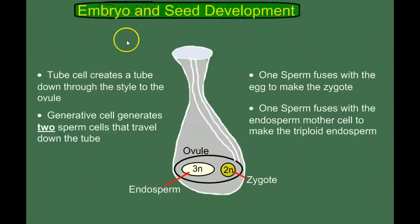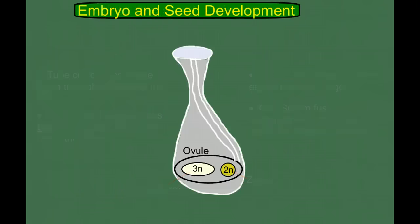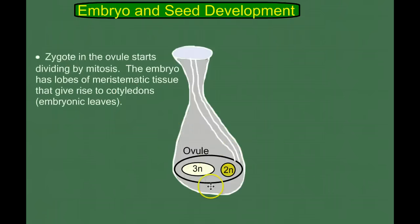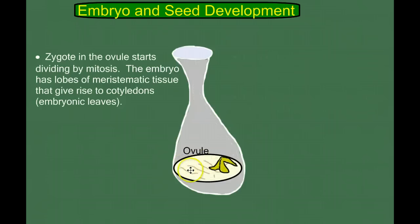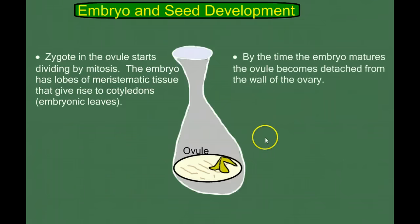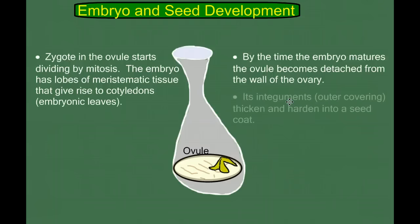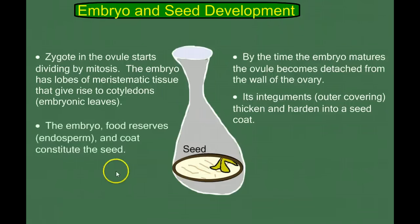Now let's look at embryo and seed development. The zygote in the ovule starts dividing by mitosis, and the embryo has lobes of meristematic tissue called cotyledons. The nutritive tissue around it, the endosperm, is triploid. By the time the embryo matures, the ovule becomes detached from the wall of the ovary; its integuments start to thicken, forming the outer seed coat — so the ovule is becoming the seed. The embryo, the endosperm, and the seed coat together constitute the seed. The ovule is inside the ovary, and the ovule becomes the seed.